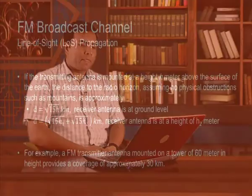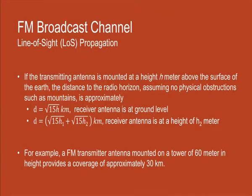For most radio reception we can safely assume that the receiver antenna height is 0, but if another station is used as a repeater, the range can be enhanced. For example, for an FM transmitter antenna mounted on a tower of around 60 meters height, the range will be approximately 30 kilometers. This is typically the city-based FM coverage radius.